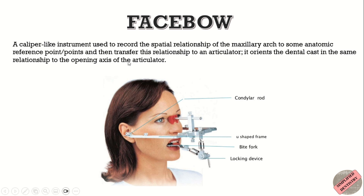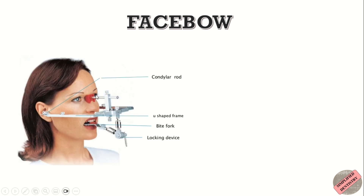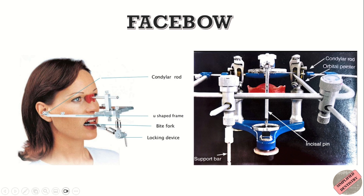The orientation is the same in the patient's mouth as well as in the articulator. It helps to accurately replicate the patient's jaw position when fabricating a dental prosthesis such as dentures.